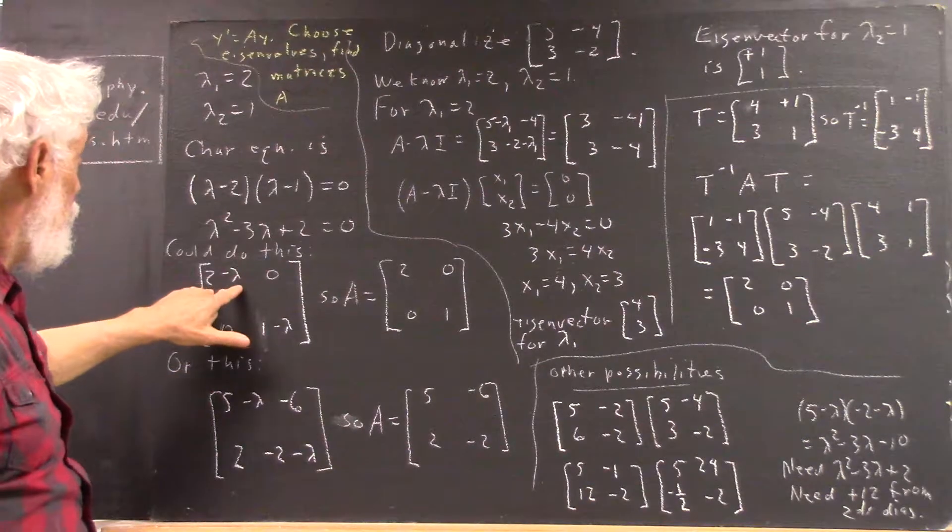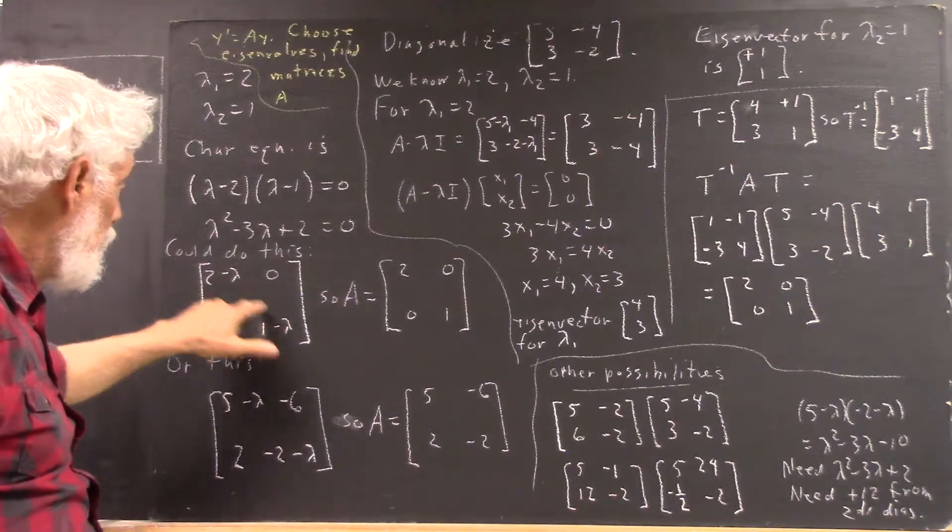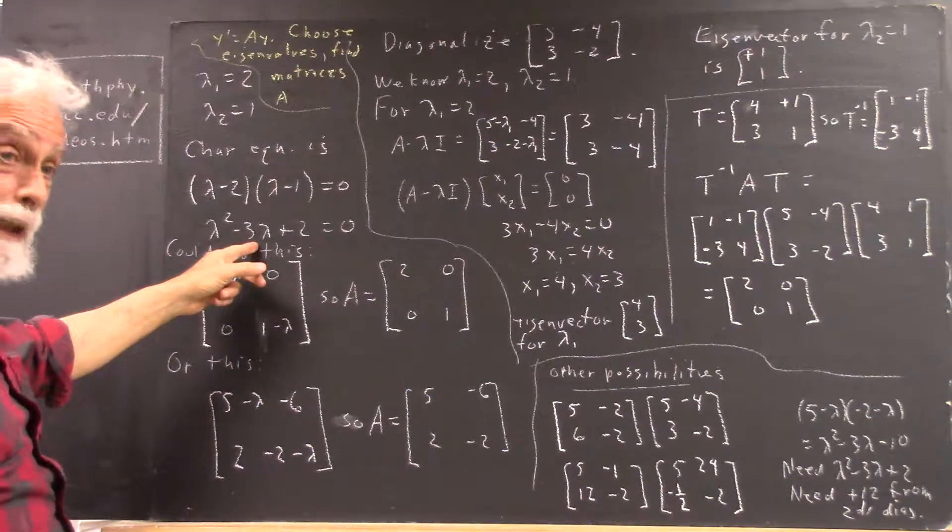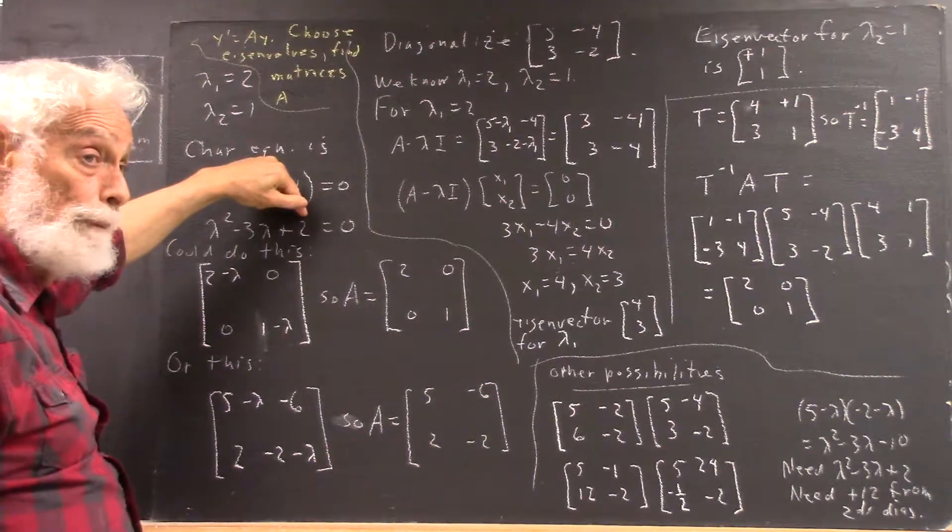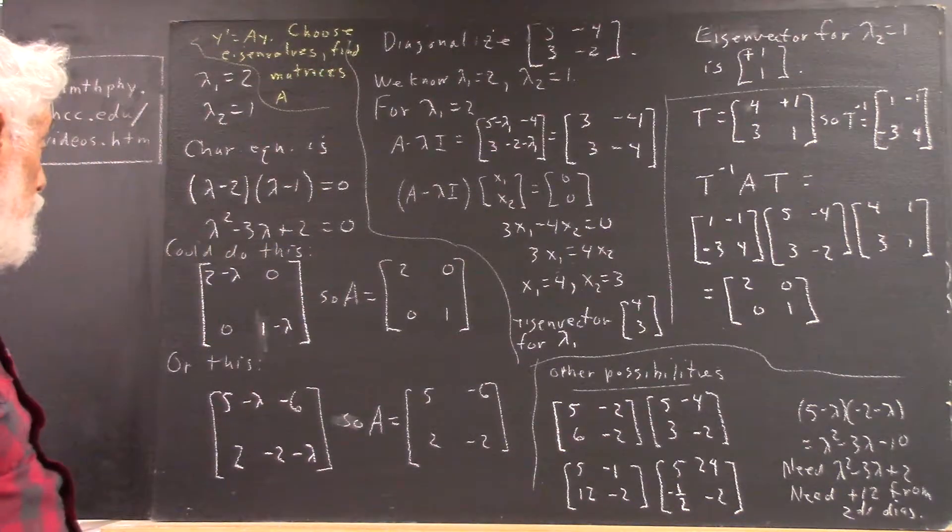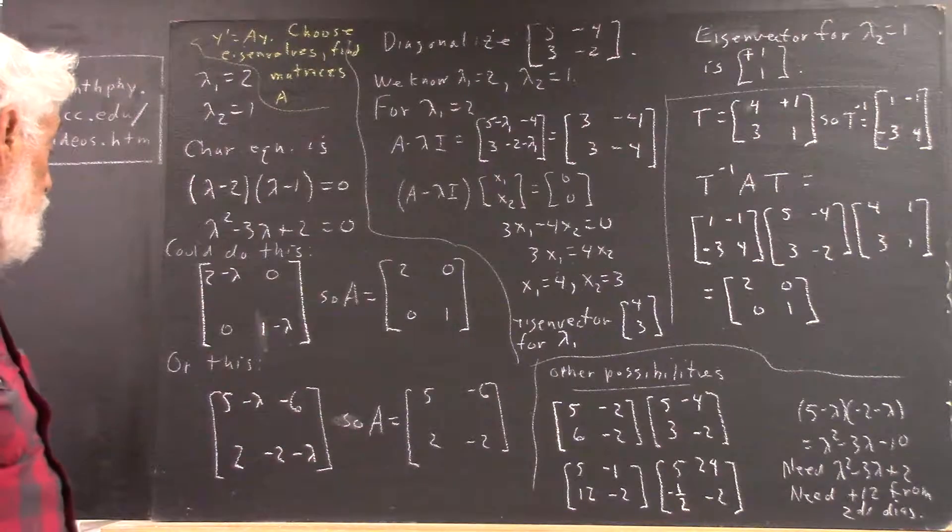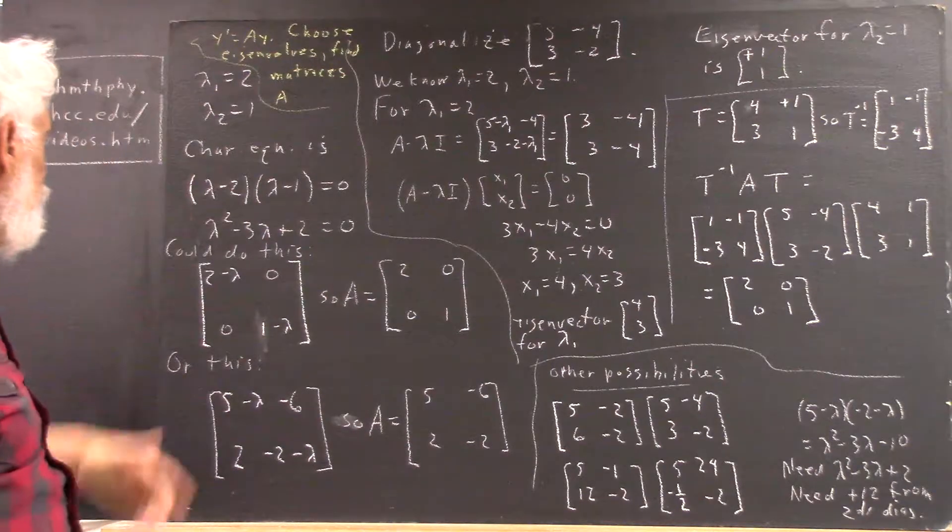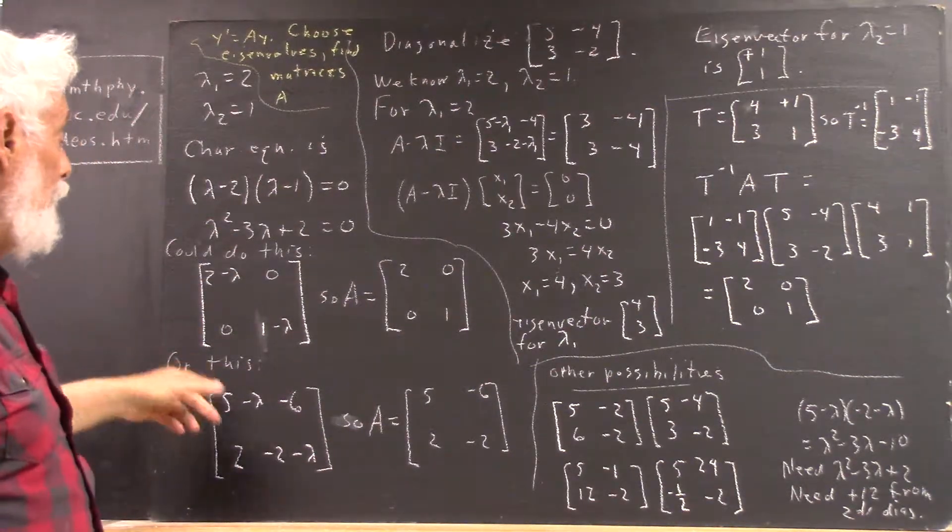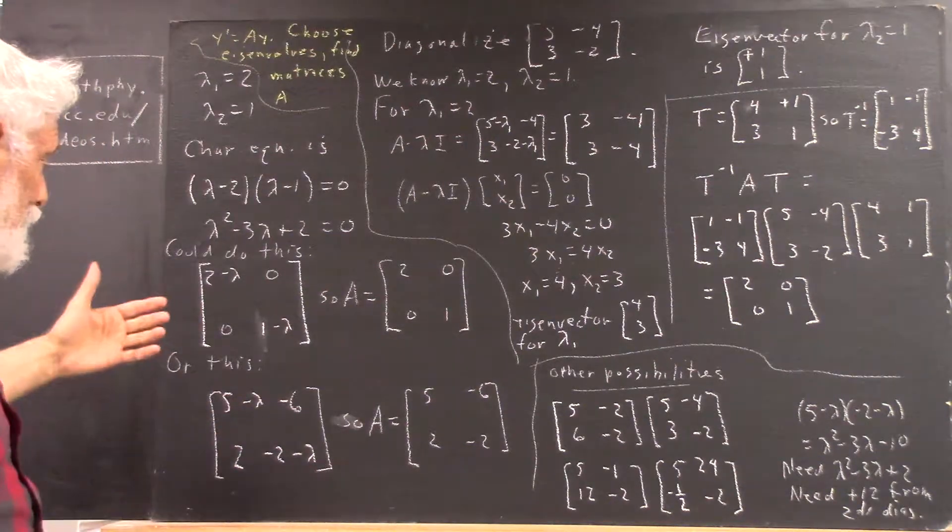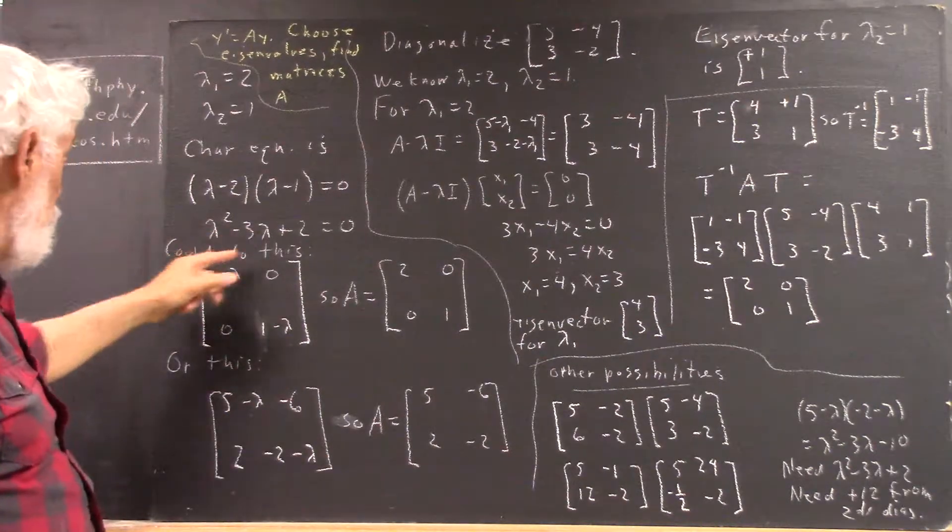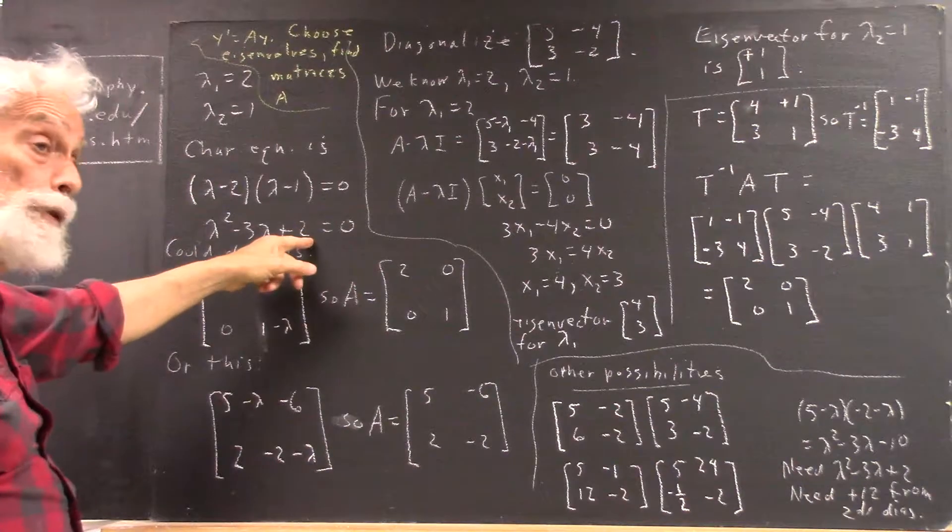As long as the product of the main diagonal elements give you lambda squared minus 3 lambda, we can get that 2 here by just adjusting the numbers on the secondary diagonal. So, ask somebody to give me two other factors that could give us negative 3 lambda. And somebody says, okay, 5 and negative 2. Because, of course, if you do 5 minus lambda times 2 minus lambda you're going to get your minus 3 lambda and your lambda squared. Now, you're not going to get 2 here but that's the whole point.